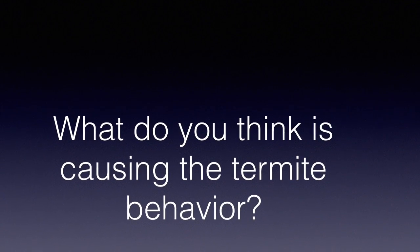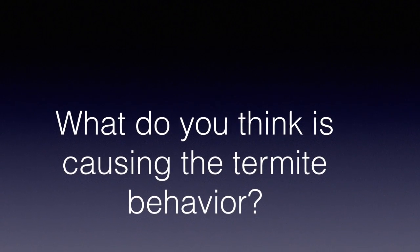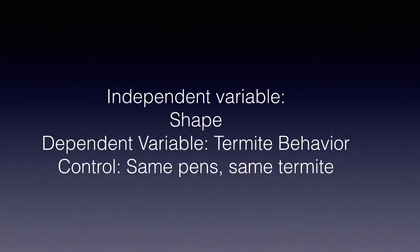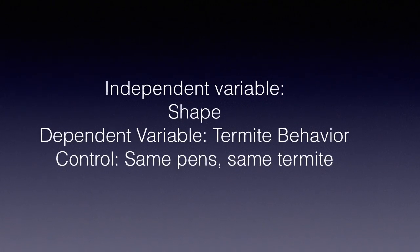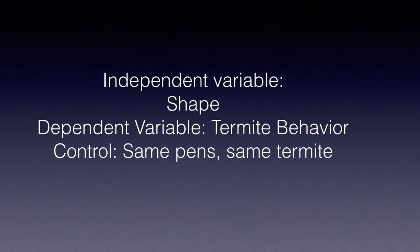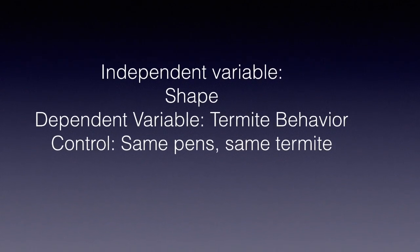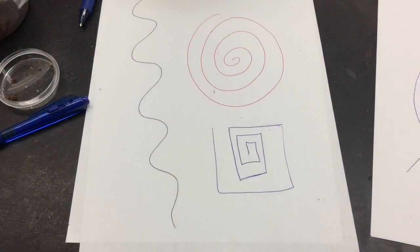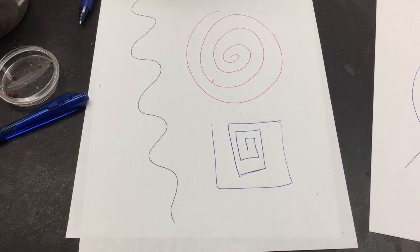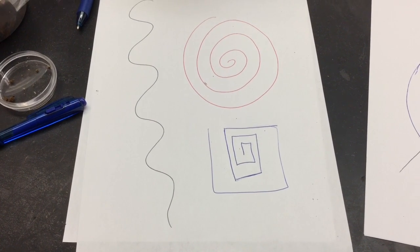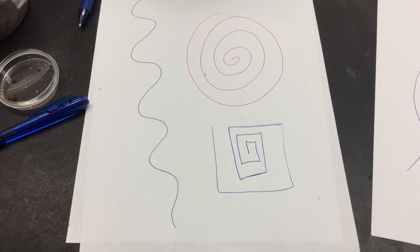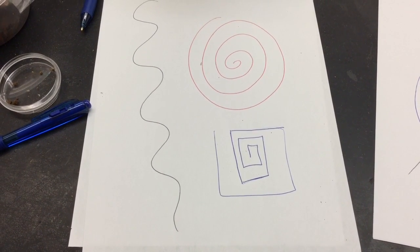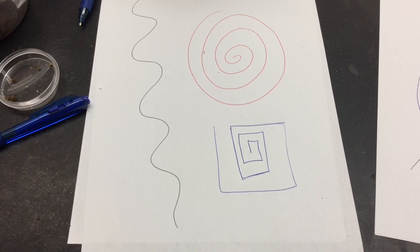Now we're going to design an experiment to see if we can figure out exactly what is causing the termite behavior. As you can see, I kept the color of the pen the same, but I just changed the shape of the line.